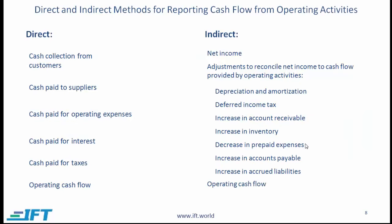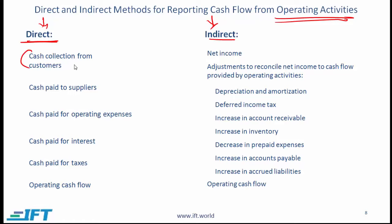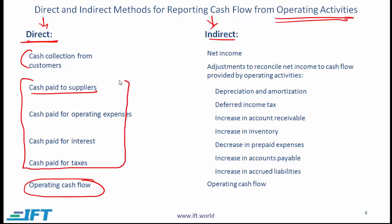A cash flow statement can be presented in either a direct or indirect format, and specifically it is the operating activities section that can be presented in one of these two ways. The direct format is easy to understand — it takes the income statement and expresses items from a cash perspective. So instead of saying revenue, we say cash collected from customers; instead of cost of goods sold, we say cash paid to suppliers. Operating cash flow is arrived at by taking cash from customers and subtracting all cash payments. With the indirect format, we start with net income and make several adjustments to arrive at operating cash flow.